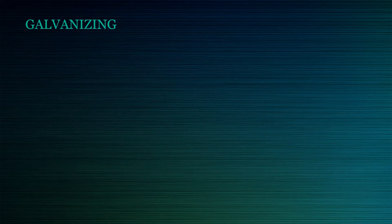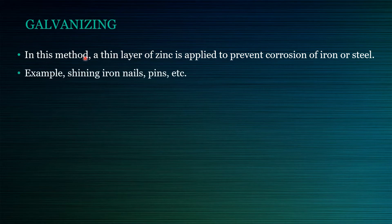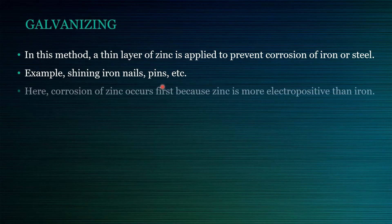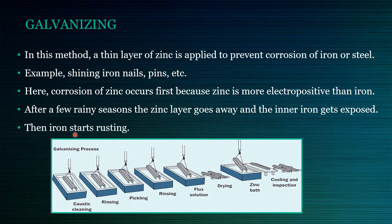The first method we are going to learn is galvanizing. In this method, a thin layer of zinc is applied to prevent corrosion of iron or steel. For example, shining iron nails, pins, etc. are galvanized articles. The corrosion of zinc occurs first because zinc is more electropositive than iron. After a few rainy seasons, the zinc layer goes away and the inner iron gets exposed, and then the iron starts rusting. So galvanization is a long-term process — it is a layer of zinc applied over iron or steel to prevent corrosion.